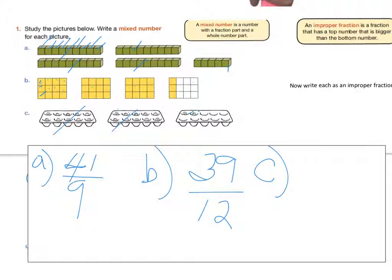C — there were ten in one group (two by five array). Two groups of ten is 20, plus two more is 22. So our denominator is ten. So 22 tenths is how we would say this improper fraction.